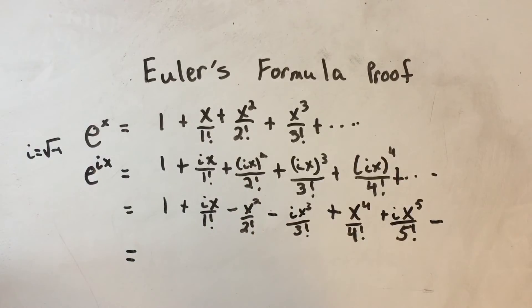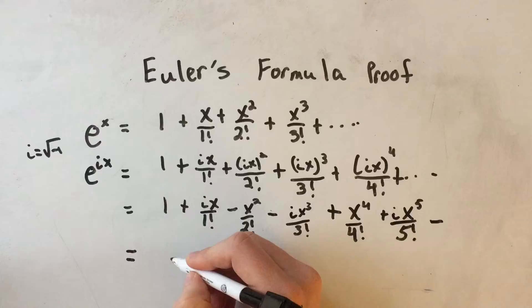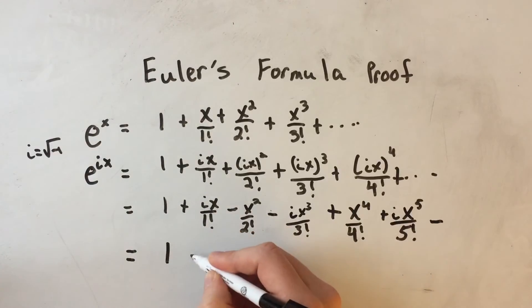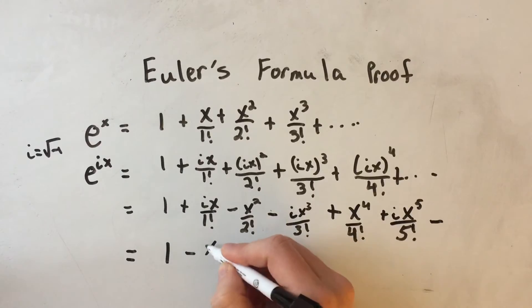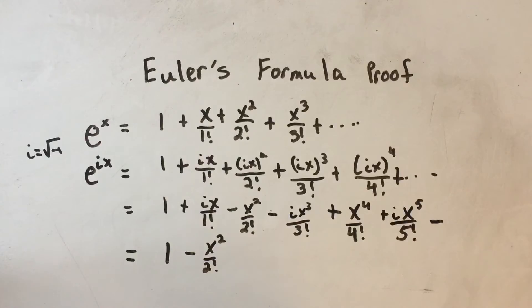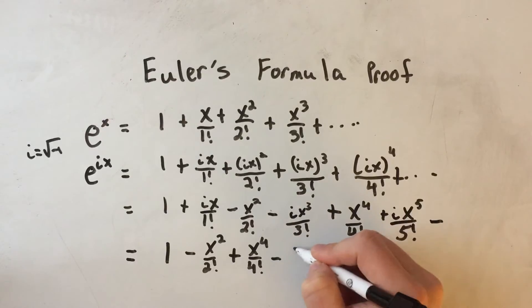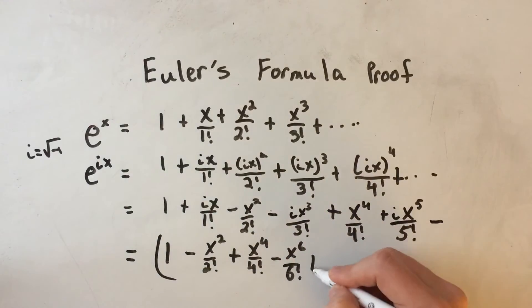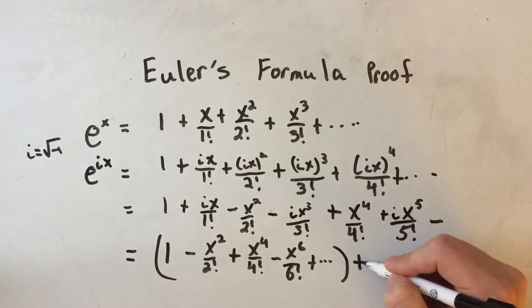And here's what I do next. I group the first one, the first group is going to be without the i's, so I'm going to start with the 1, and then I'll take the next term without i's, which is minus x squared over 2 factorial, then I'd have plus x to the 4th over 4 factorial, the next one would be minus x to the 6th over 6 factorial. I'm going to group those terms together, and then I'm also going to group the terms with the i's together.